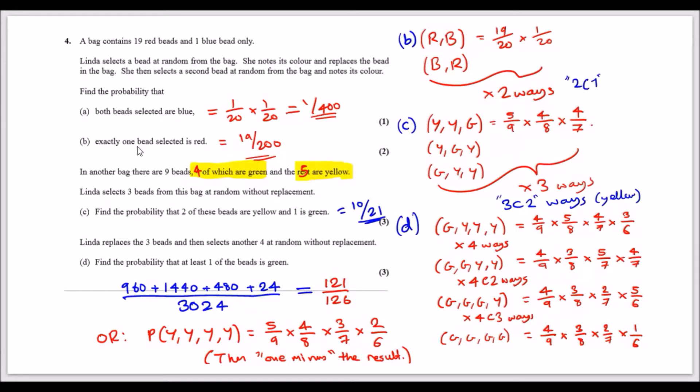Next, find the probability that exactly one bead selected is red. Now to get exactly one red, this means you need to have combinations. This means the first one needs to be red and the second one needs to be blue, or you could have the blue being the first bead and the red being second. Either way, this means exactly one bead in either scenario.